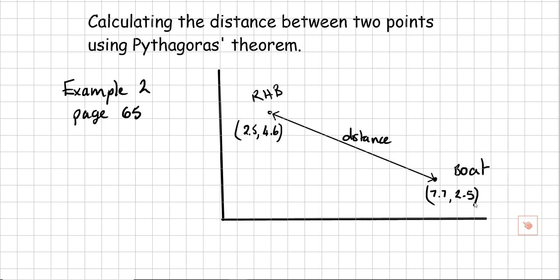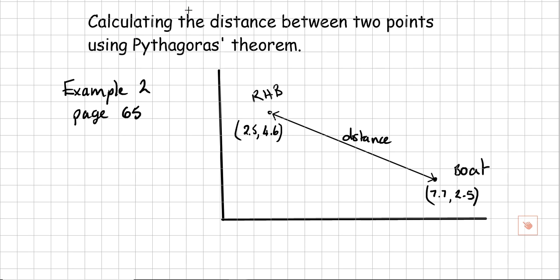We want to know that distance. When I said we're using Pythagoras's theorem, what are we looking for? A right angle triangle. You can already spot where the right angle triangle is. So there's my right angle triangle.